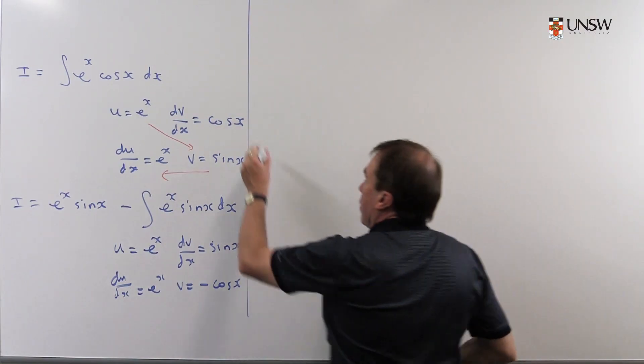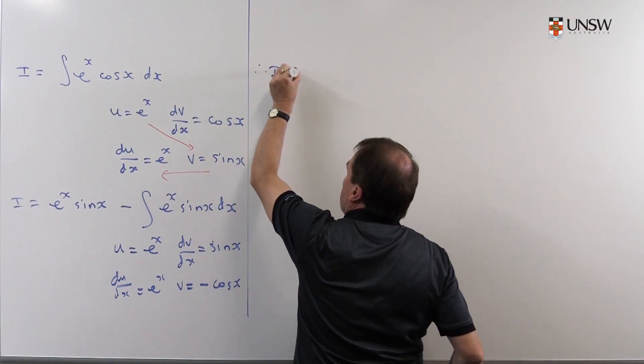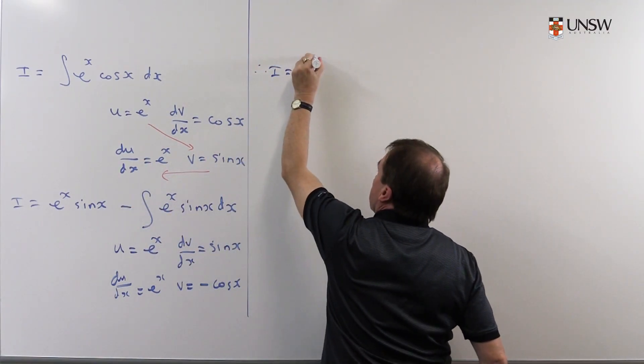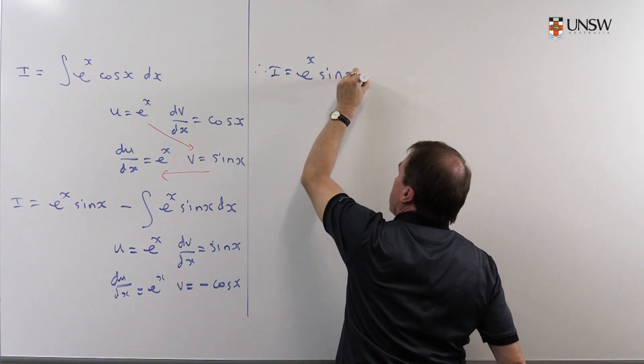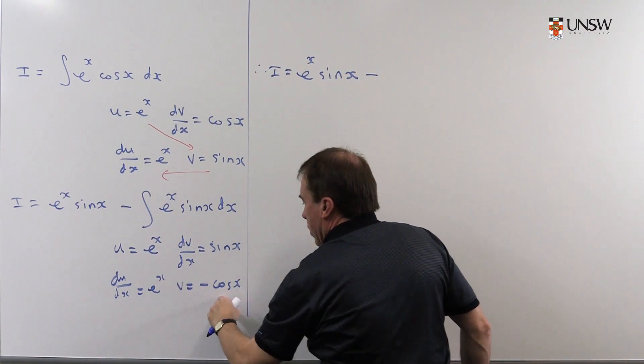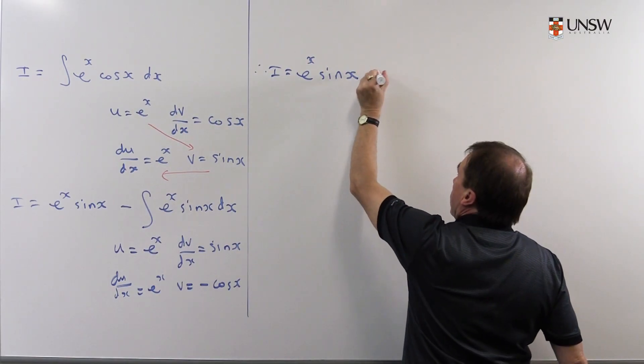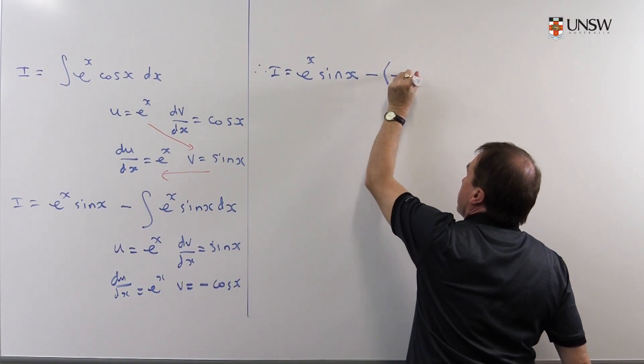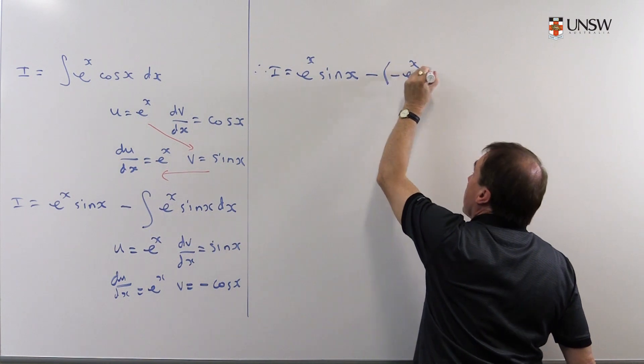And again, so I can say my integral then is, I copy down the first term. That's e to the x sin x minus, now I do that one times that one. So that's minus minus e to the x cos x.